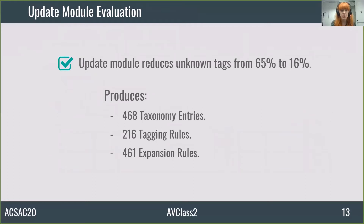We also evaluated the update module. When we first ran the labeler, we observed that 65% of samples contain an unknown tag. To reduce this number, we ran the update module, and it introduced hundreds of taxonomy entries and tagging and expansion rules. Then we ran the labeler again, and the unknown tags were reduced from 65% to 16%. We also compared the results with the latest version of the state-of-the-art tools AV Class and Euphony. Due to the lack of time in the presentation, we refer you to the paper for the details.